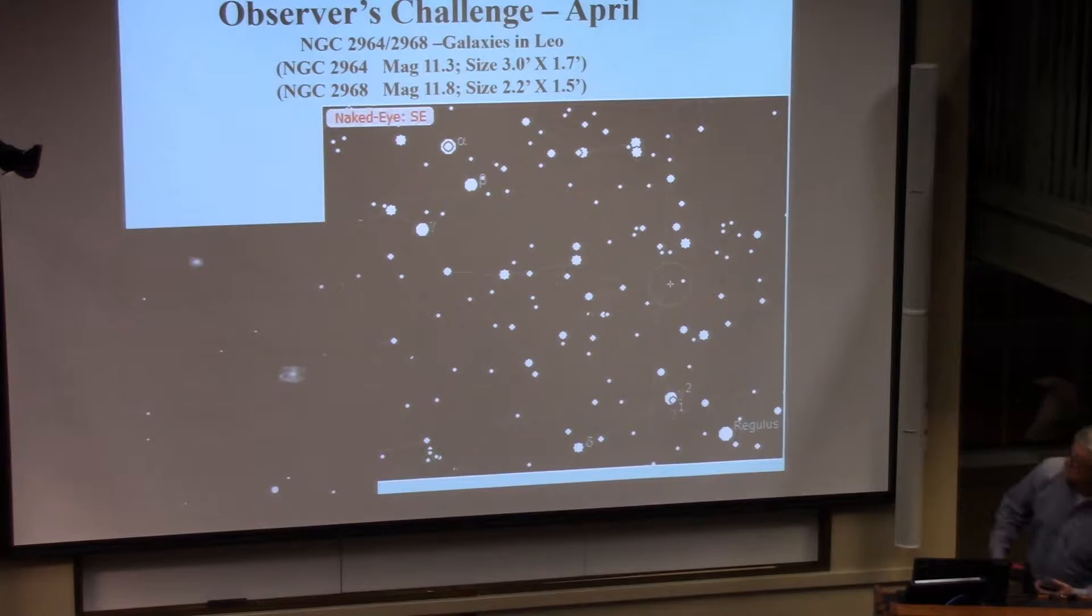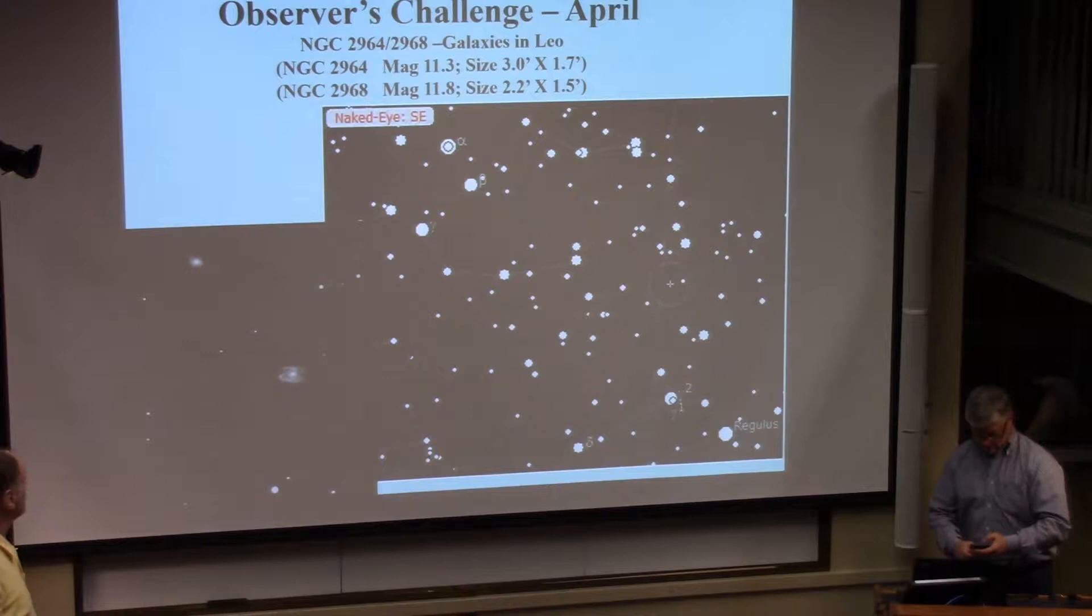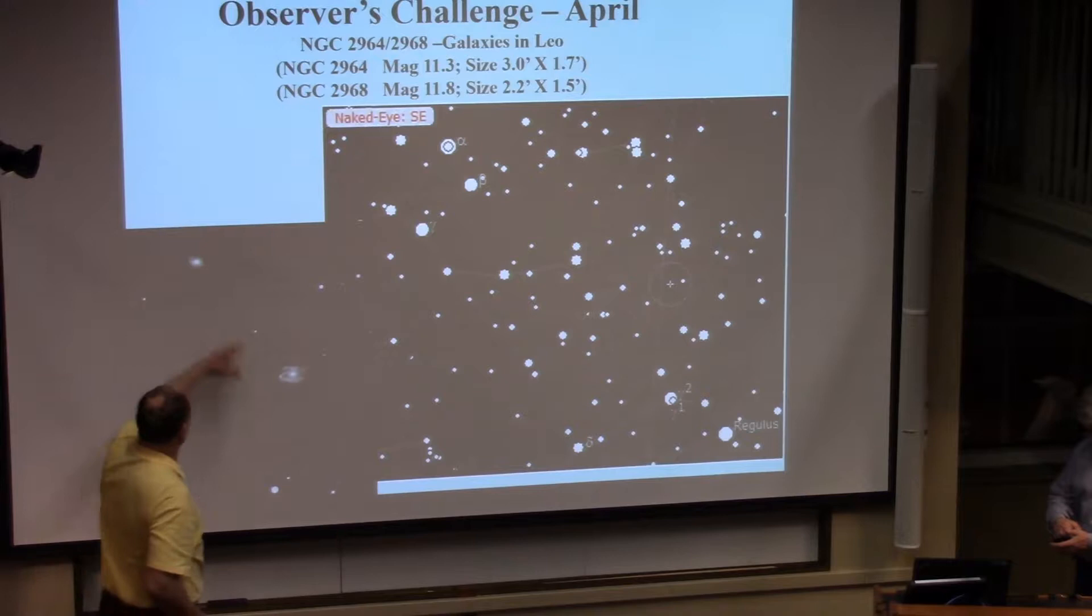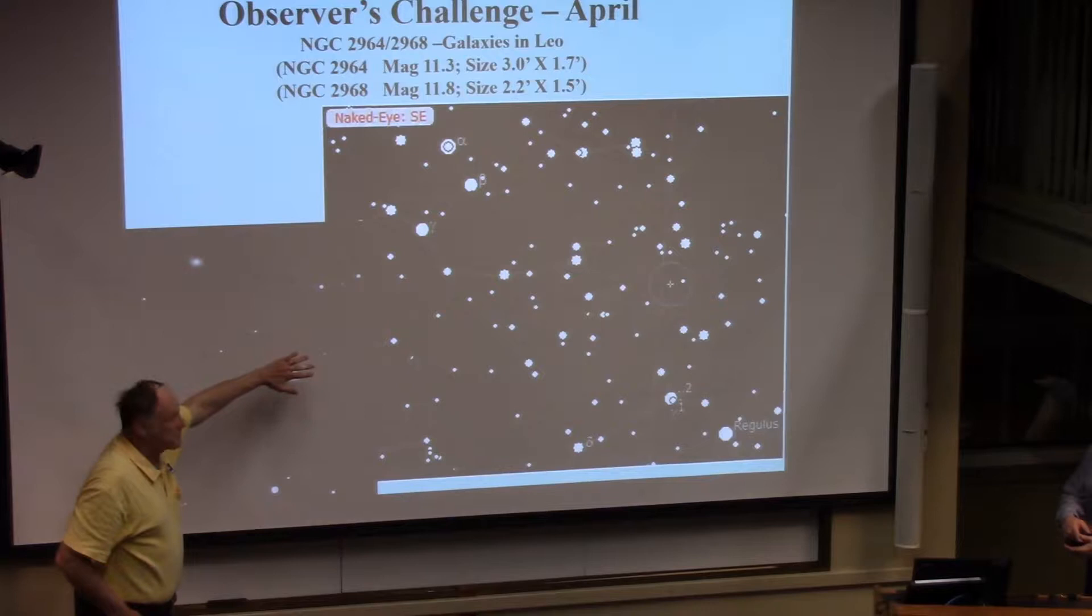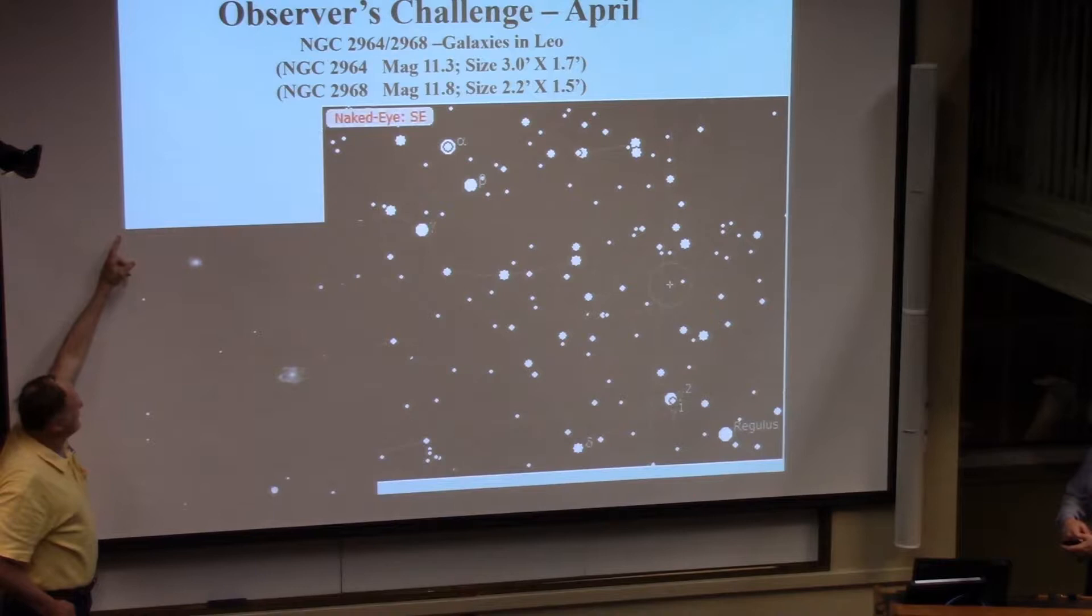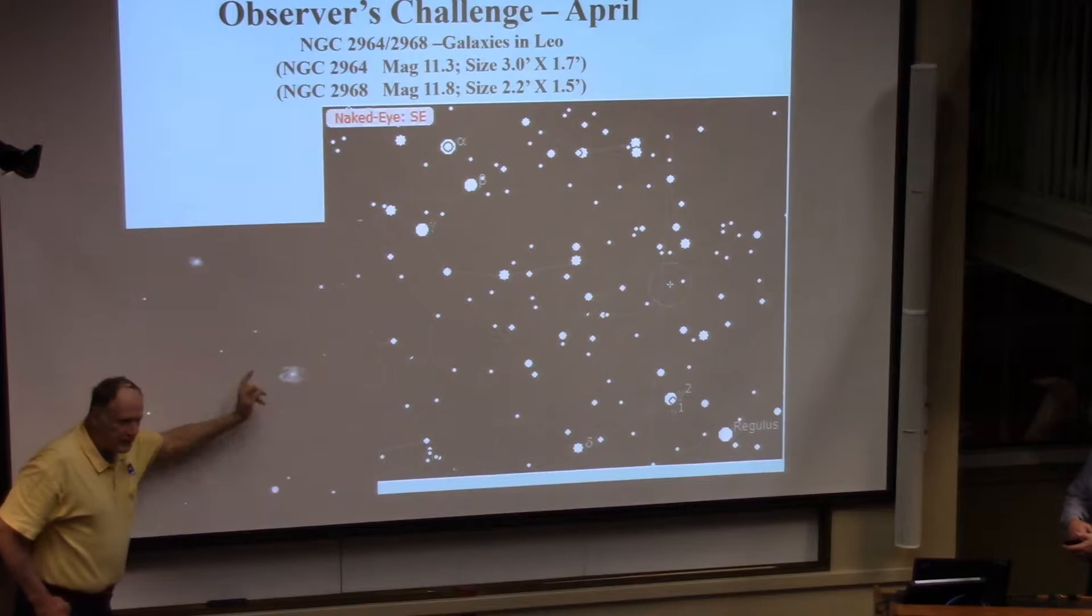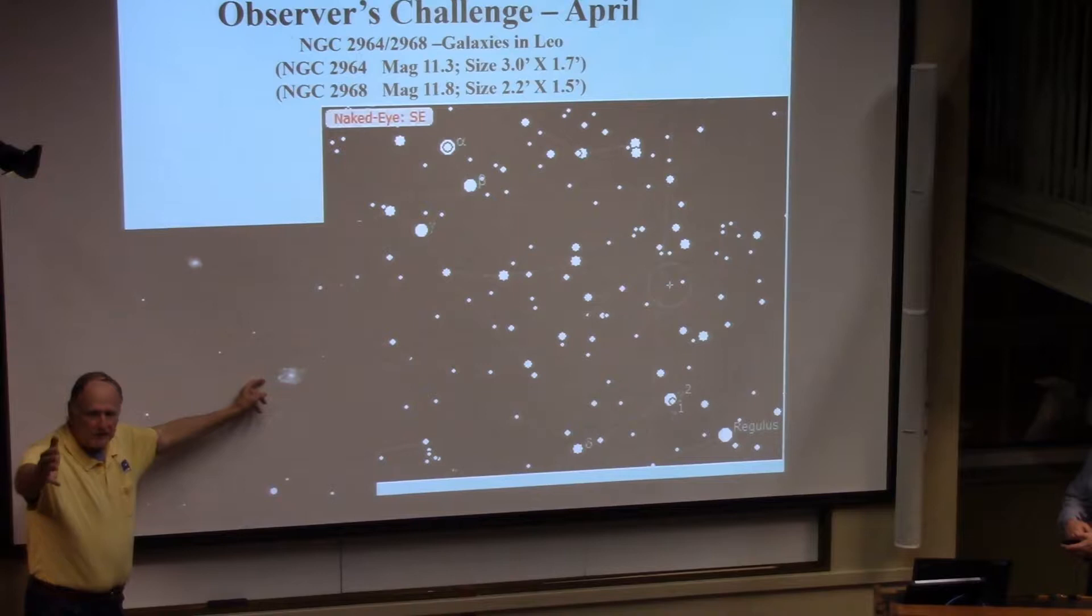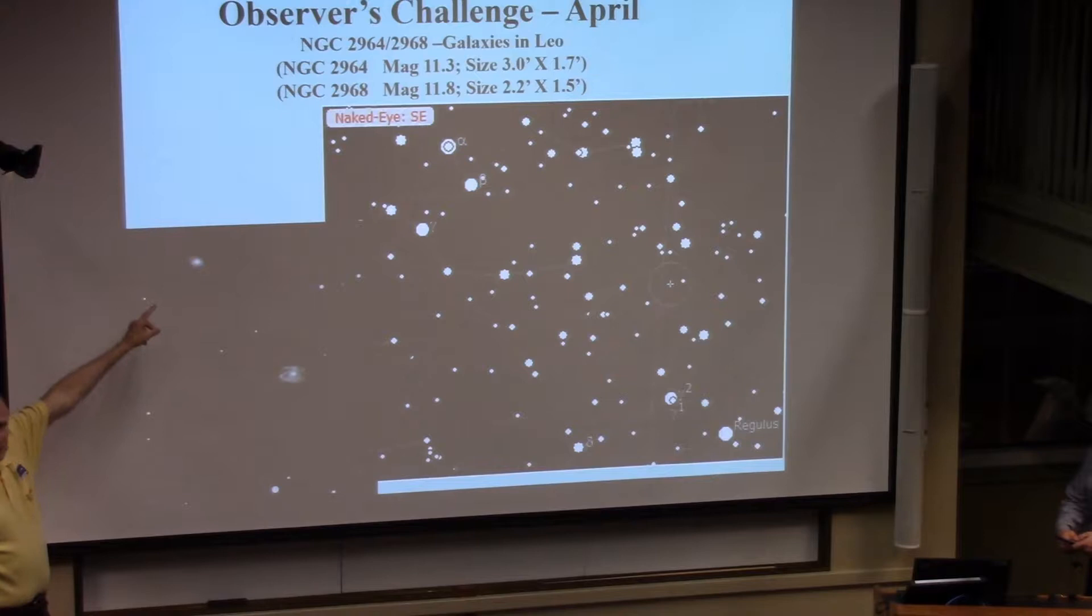The observing challenge for April, a couple of galaxies that are just above the question mark in Leo the Lion. NGC 2964, 2968, they're galaxies. Here they are in a Mario Moden image. 2964 is a brighter one, it's kind of a slanted spiral, and this is a lenticular galaxy right here. I think I've seen these with Steve's telescope. I think they both look just like small, almost like elliptical galaxies, but they were visible in Steve's 18-inch scope.